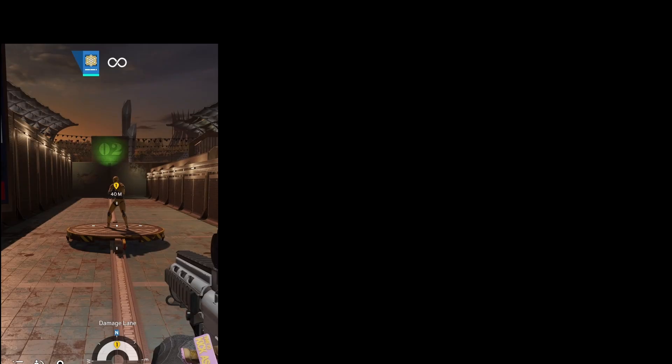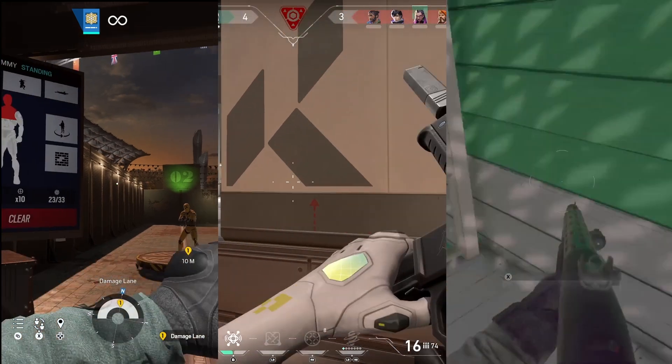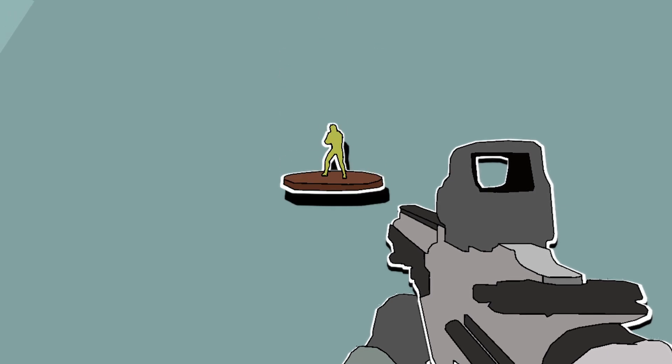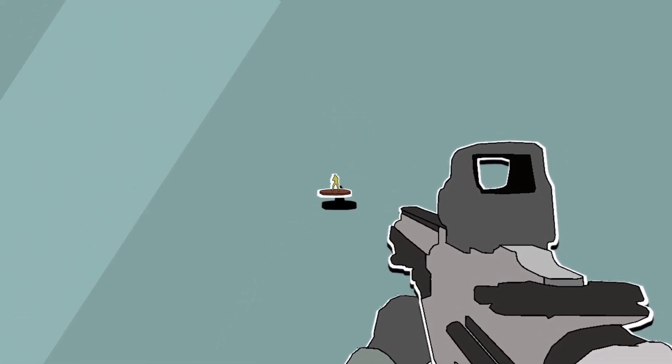What does Rainbow Six Siege, Valorant, Call of Duty and most popular shooters have in common? They all have guns, but most importantly, they all implement damage drop-off. And surprisingly, they all use the same math to do it.